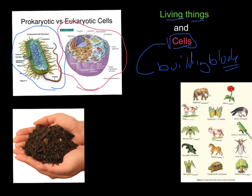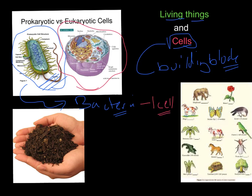This diagram right here is an example of a bacterial cell. A bacteria is something that is living — it's a living creature or living being — and it's made up of only one cell. So we call it unicellular, which means it's made up of just one cell. Uni means one, so it's unicellular.